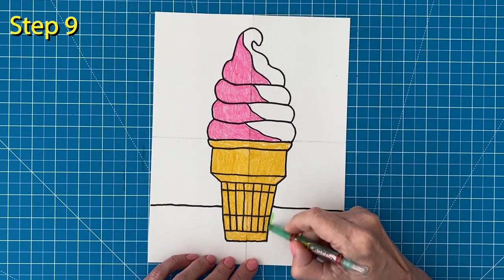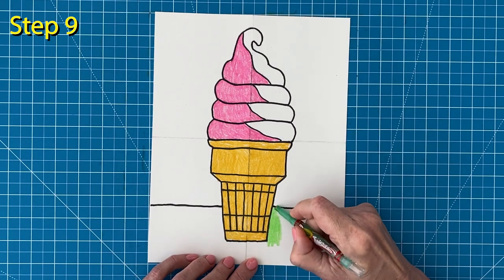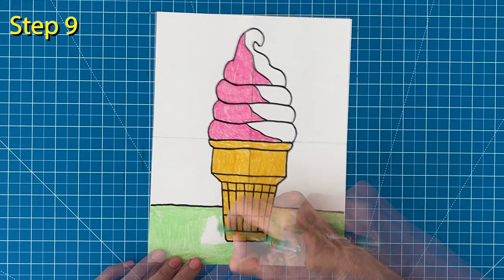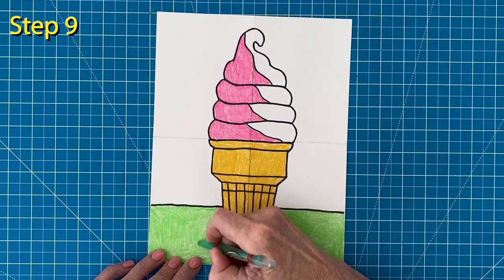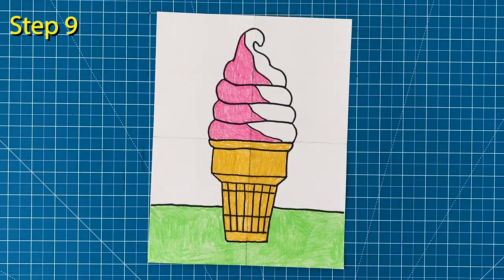I'd like my tabletop to contrast my cone a bit so I'm going to use a really bright green. Remember again to press hard so that you get lots of bright color.